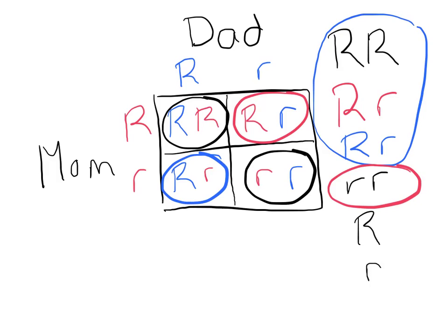So basically, Punnett squares just really help us predict what our future generations are going to look like given our parents' genotypes.